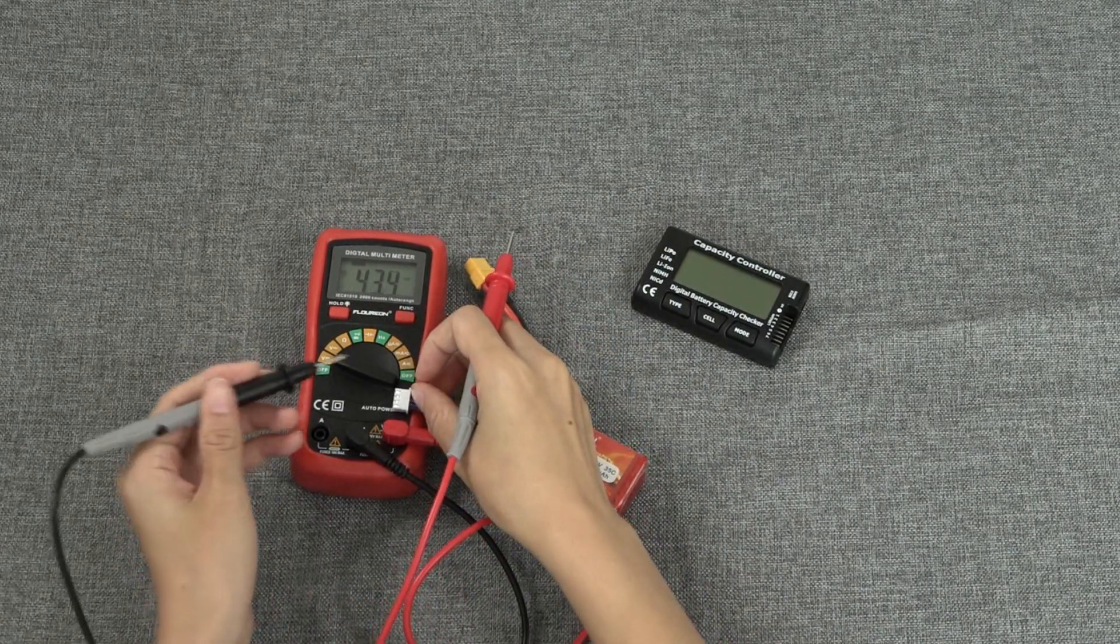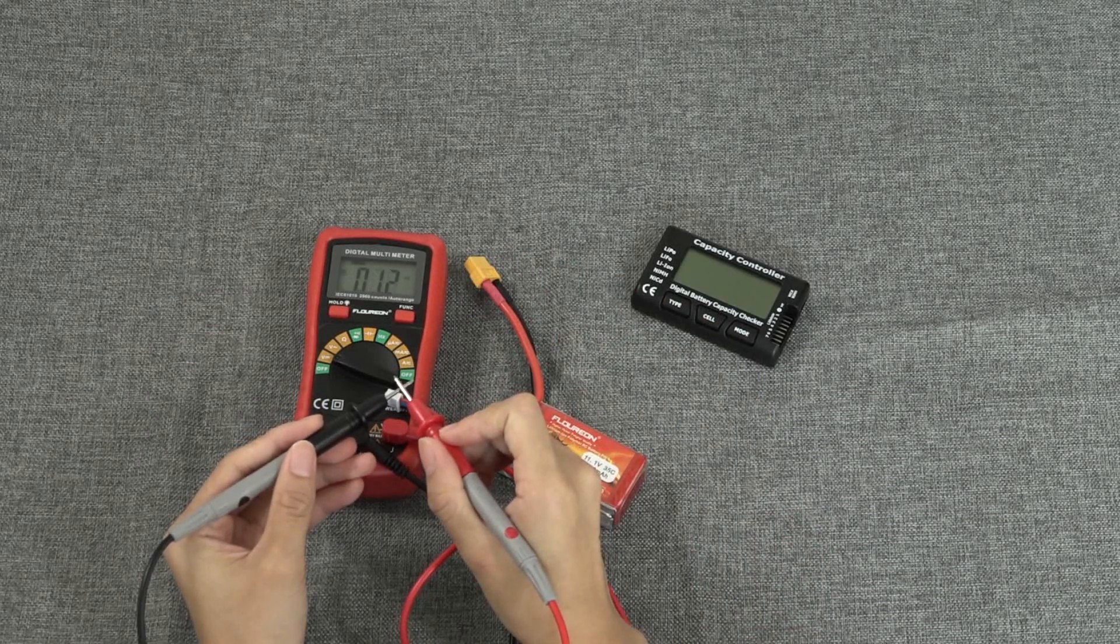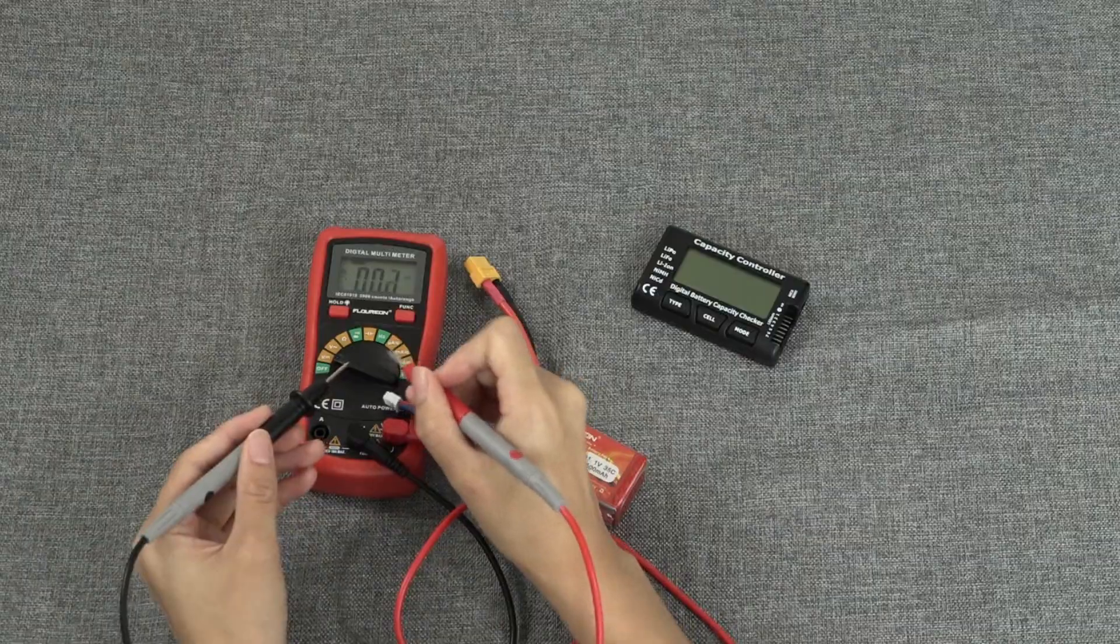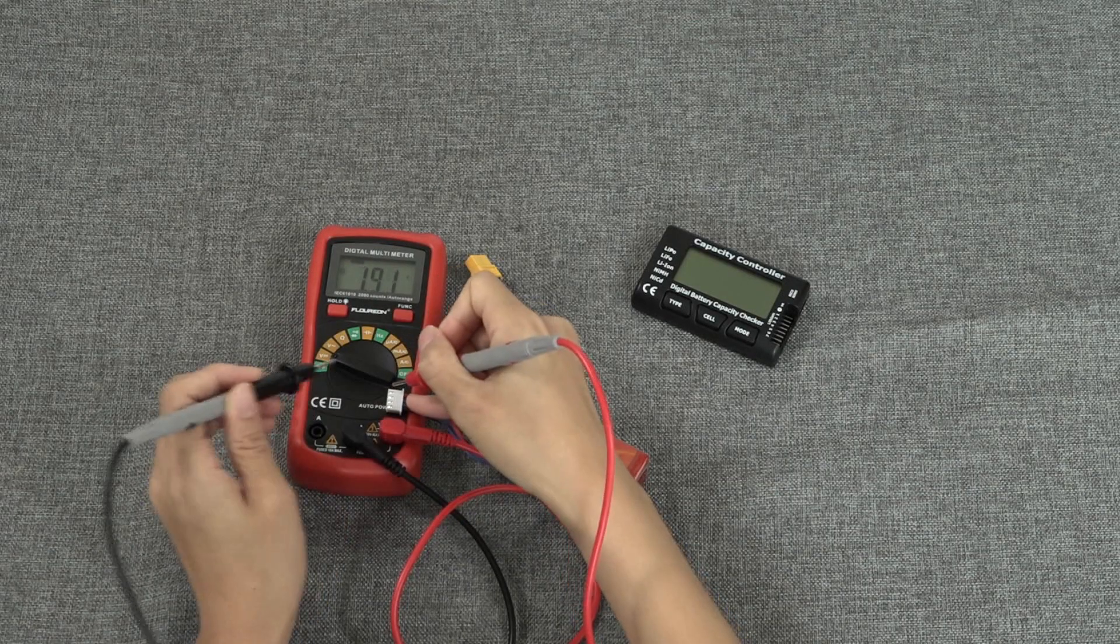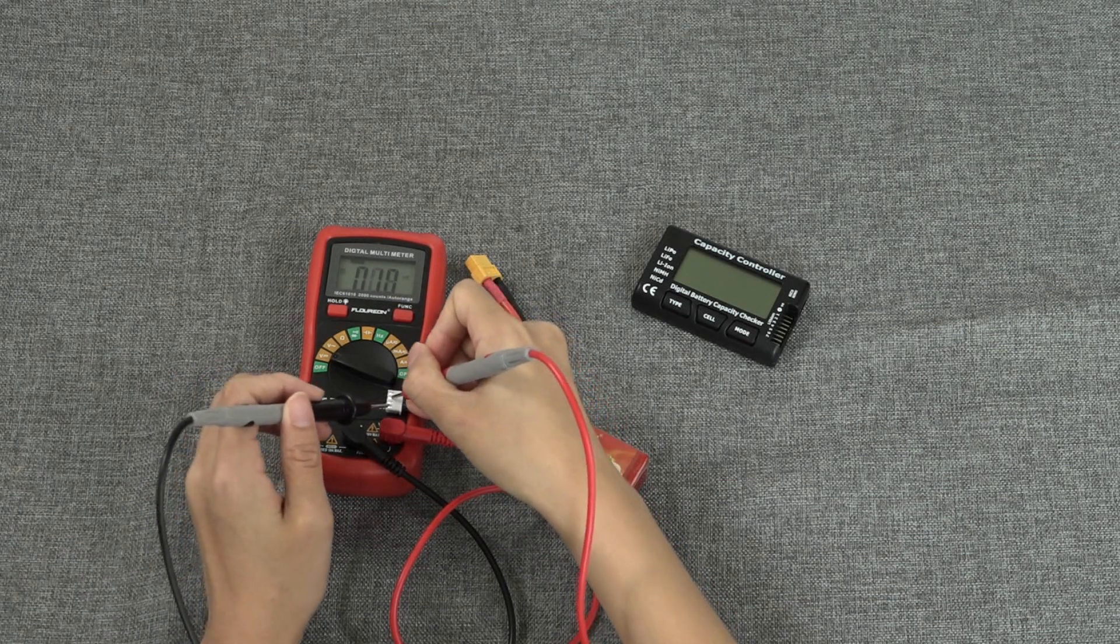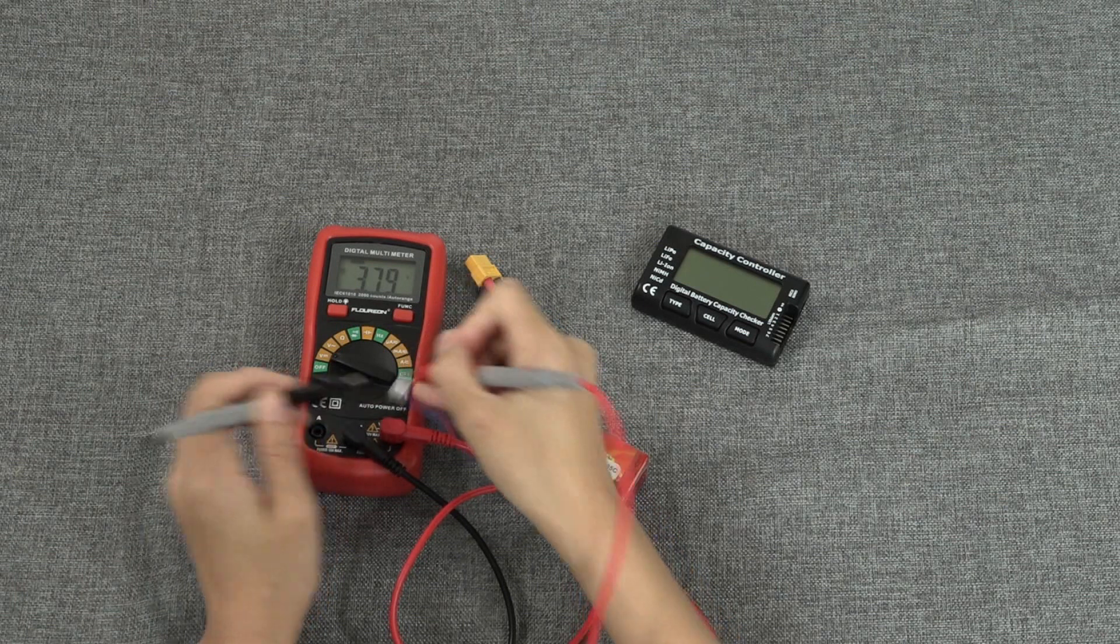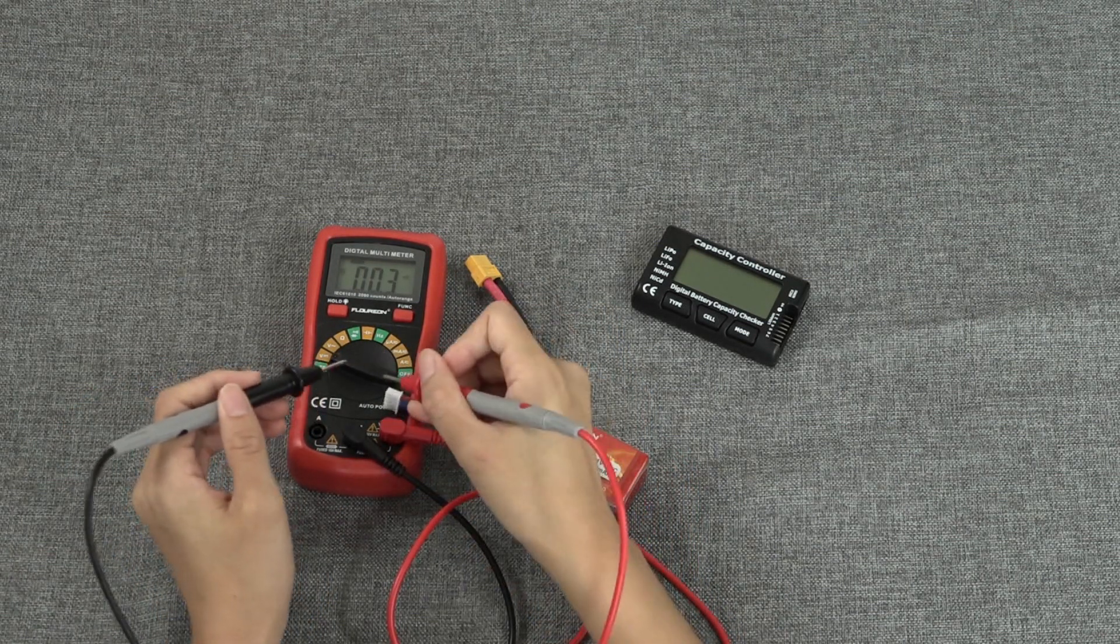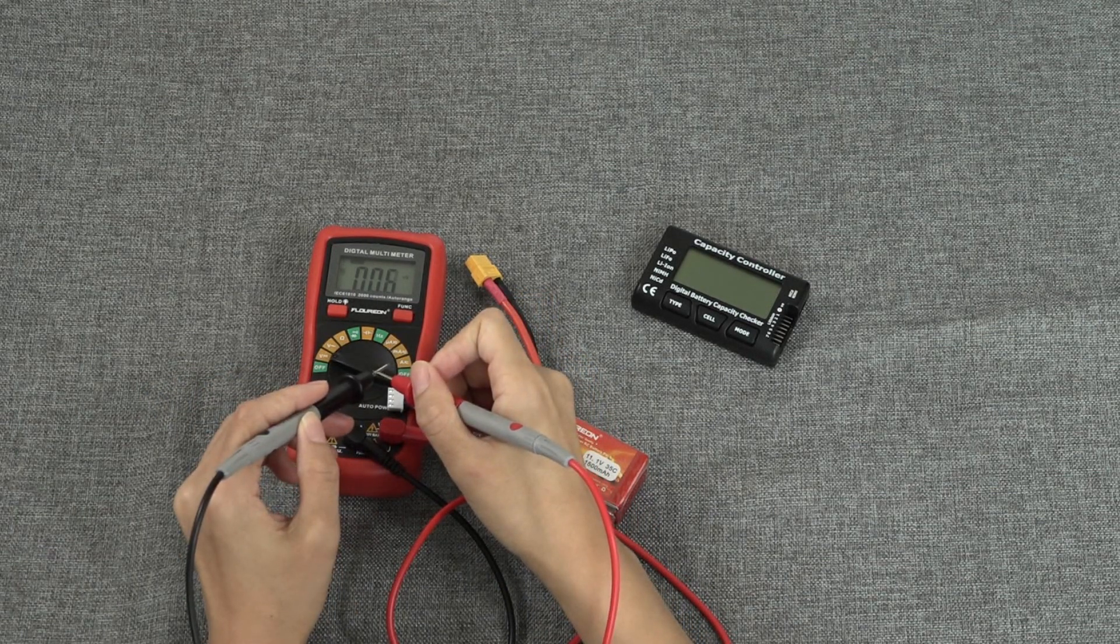Here I will show you how this works. First of all, you cross the electronic pins like this, and then we test. Cell 1 is 3.79, cell 2 is 3.79 also, and at last, cell 3 is 3.79. Well, perfect cell balance.